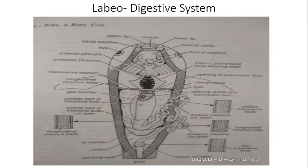This is the diagram of the alimentary canal. Teeth and a distinct tongue are absent in Labio. The anterior part of the pharynx is respiratory and the posterior part of the pharynx is masticatory. This is the anterior part of the pharynx which is respiratory, and this is the posterior part which is masticatory. The anterior part of the pharynx is perforated laterally.